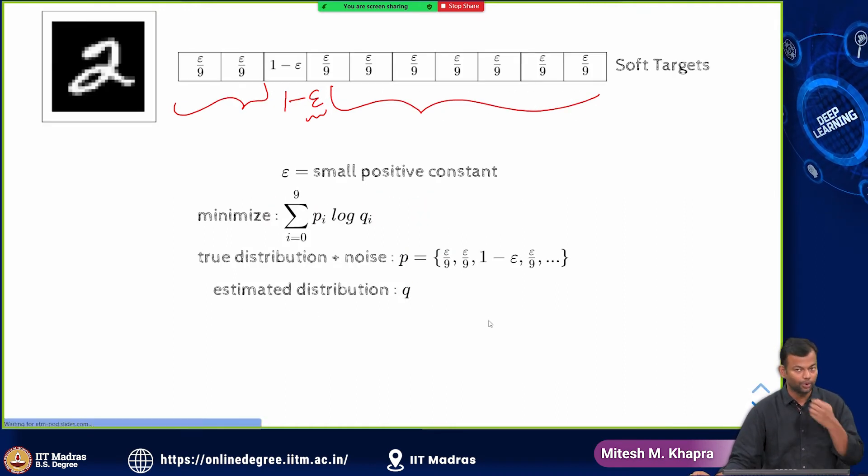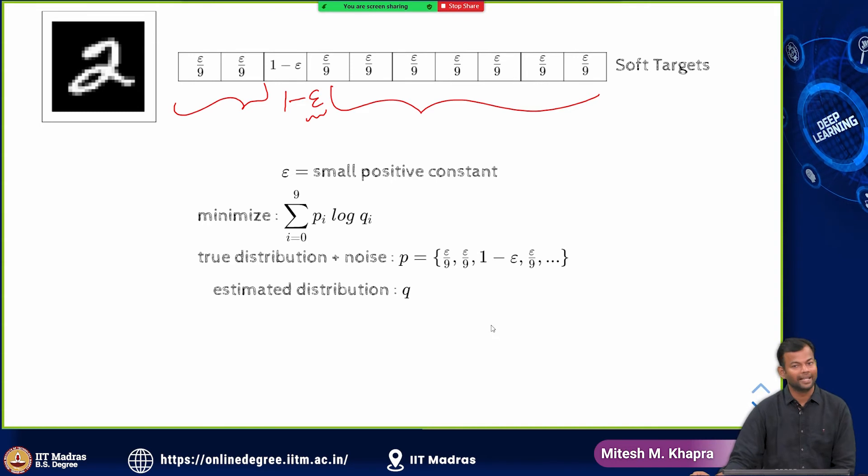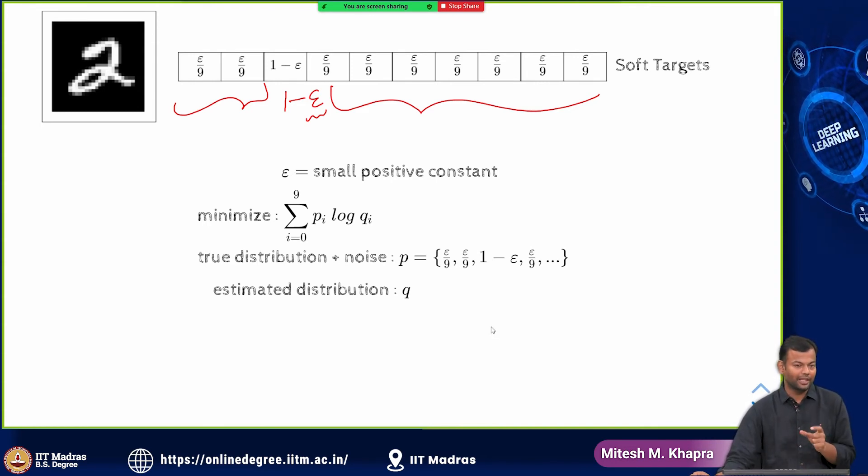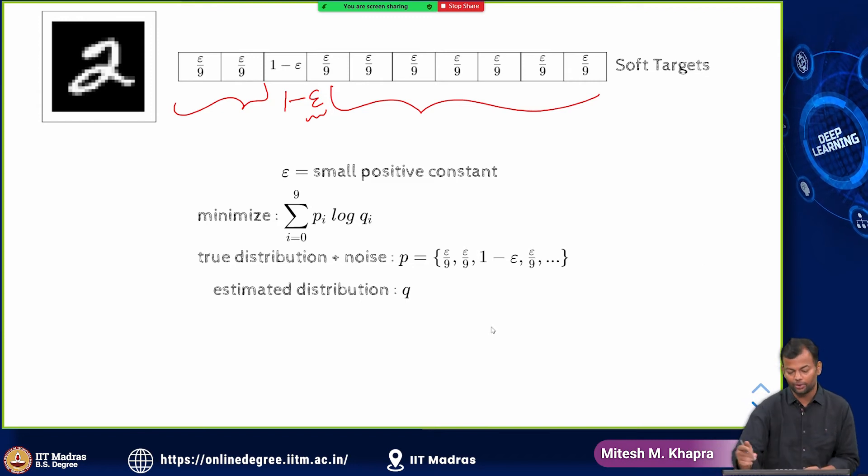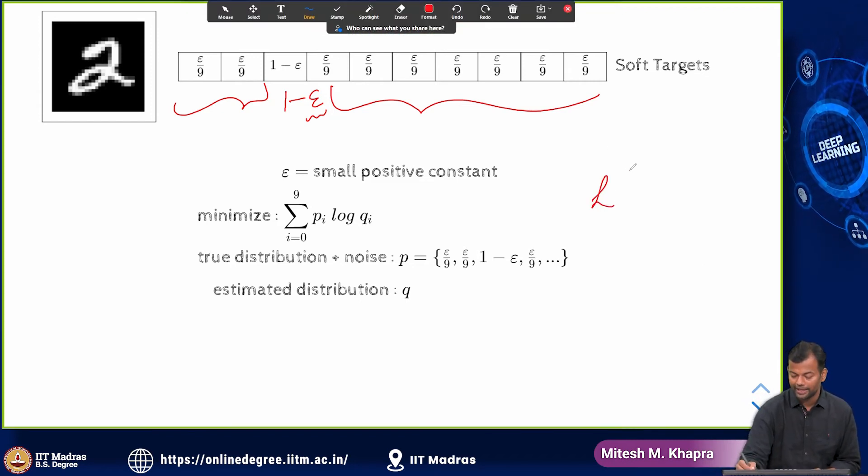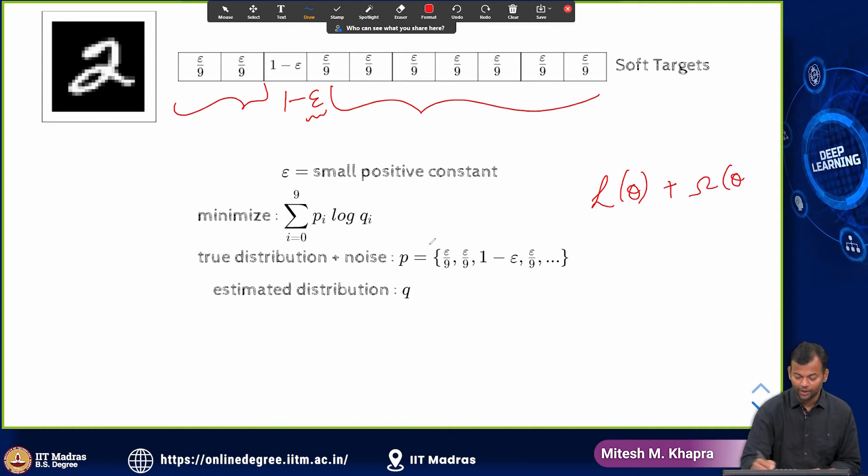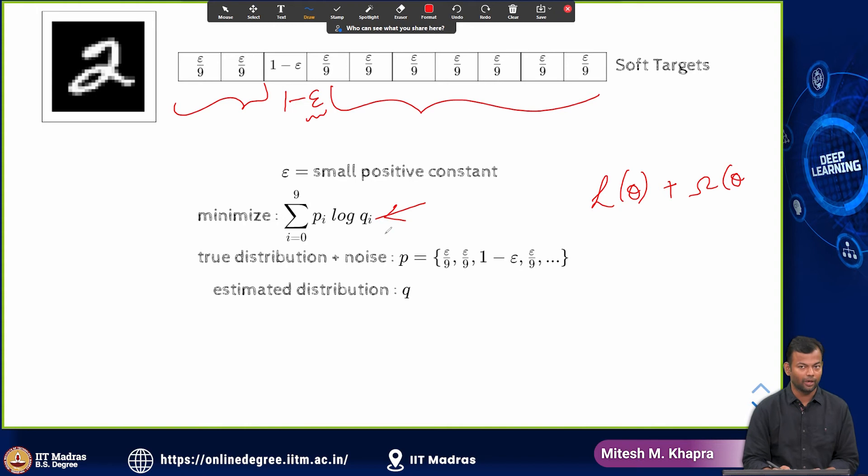That is what you do in adding noise to the outputs and now what you have done is again you have added some kind of a corruption to the loss function. Earlier you were looking at L theta plus omega theta. And now again if you open this up, and now again what has happened is earlier you had only...